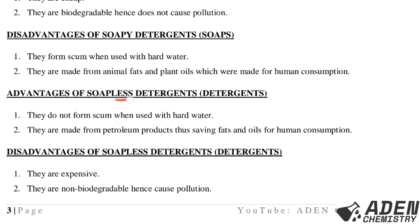Advantages of soapless detergents: they do not form scum when used with hard water, which is why they are best used with hard water; and they are made from petroleum products, thus saving fats and oils for human consumption. Disadvantages of soapless detergents: they are expensive, and they are non-biodegradable, hence cause environmental pollution.